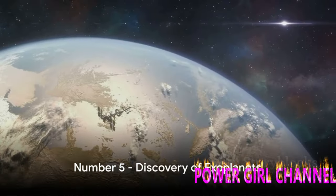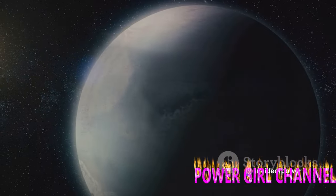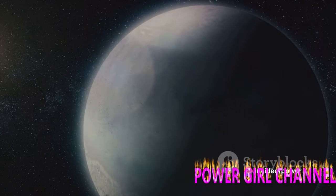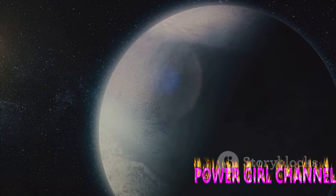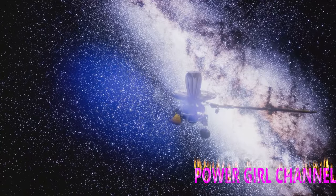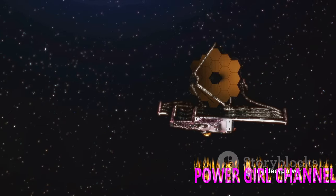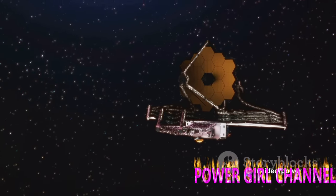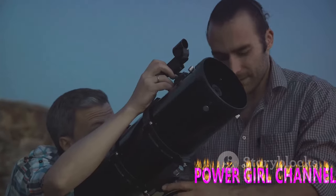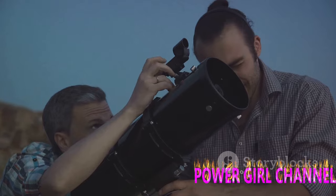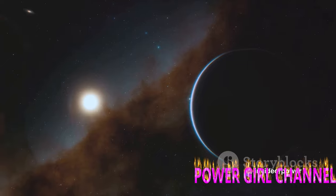Coming in at number 5 is the discovery of exoplanets. This groundbreaking work has been a game-changer in the world of astronomy. Exoplanets, or extrasolar planets, are celestial bodies that orbit stars outside our own solar system. The first exoplanets were discovered in the early 90s, but it wasn't until the launch of the Kepler Space Telescope in 2009 that we got a more comprehensive picture. This telescope has discovered over 2,000 exoplanets in less than a decade, broadening our cosmic perspective.